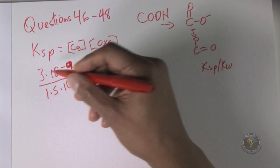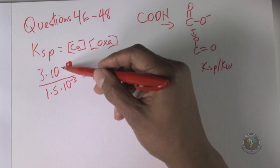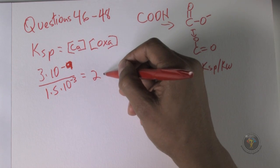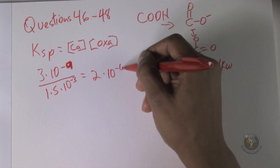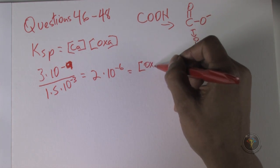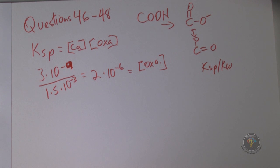So 3 over 1.5 is 2, and then we have 10 to the minus 9 minus minus 3, so then that would be 10 to the minus 6. And that's equal to the oxalate concentration. And so that's the answer.